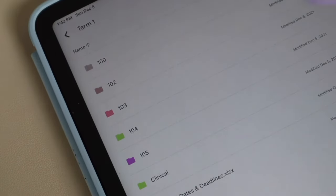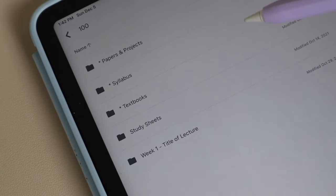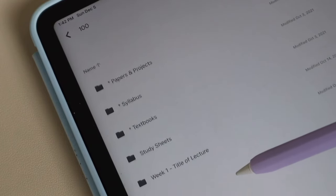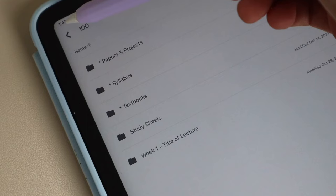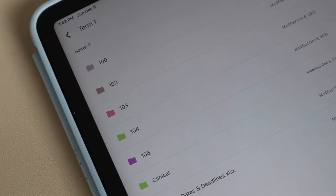For example, I have my term one already created for school and I can see what class is where and as I go into my first semester, I'll know where my lecture notes are versus my post-lecture notes and all of that.